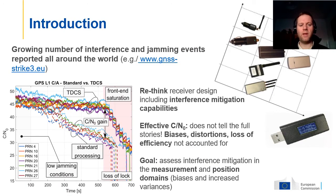As you may know, jamming and radio frequency interference are becoming more and more relevant for many GNSS applications. Indeed, there has been a growing number of interference and jamming events all around the world, as reported for example by the STRIKE3 project, which deployed several monitoring stations in 23 countries and recorded over three years of operation more than 450,000 jamming and interference events.